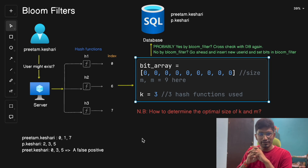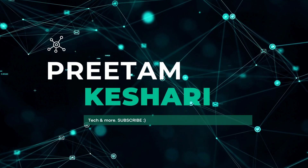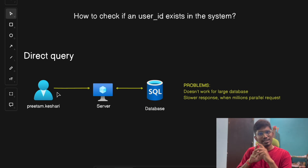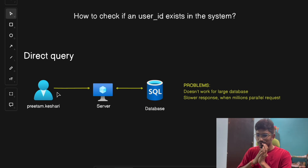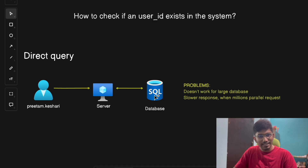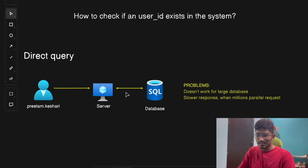You have billions of user records in the database and you need to check if a user is there or not. The first and most straightforward approach would be to use a direct query — the most basic way to do this check. You run a direct query against the database and it returns whether the user exists or not. Sounds simple, right?